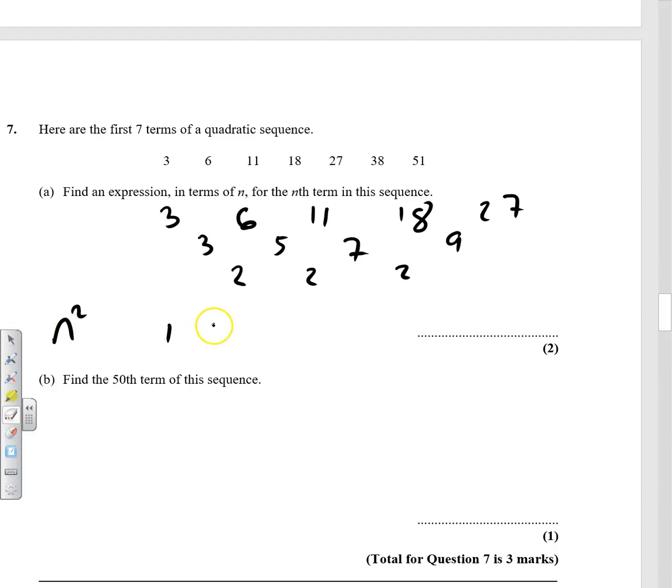Square numbers: 1, 4, 9, 16. Okay, now 1 to 3, that's add 2. 4 to 6, add 2. 9 to 11, add 2. So actually it is n squared plus 2. To find the 50th term of this sequence...